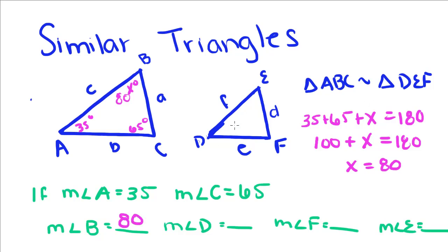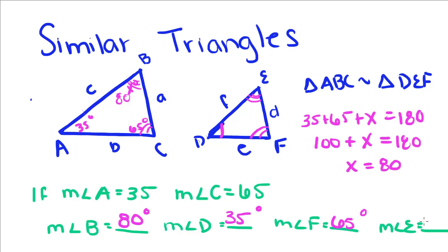So now, in order to find out the angles of the little triangle, we need to remember what similar triangles have in common. Since we know that these two triangles are similar, that means that their corresponding angles are congruent. So the measure of angle D has to equal the measure of angle A. Since angle A is 35, the measure of angle D is also 35. The same thing goes for the measure of angle F — this angle corresponds to angle C, so since angle C is 65 degrees, the measure of angle F is also 65 degrees. And last, the measure of angle E is congruent to the measure of angle B. Since we found the measure of angle B to be 80 degrees, we know the measure of angle E also has to be 80 degrees.